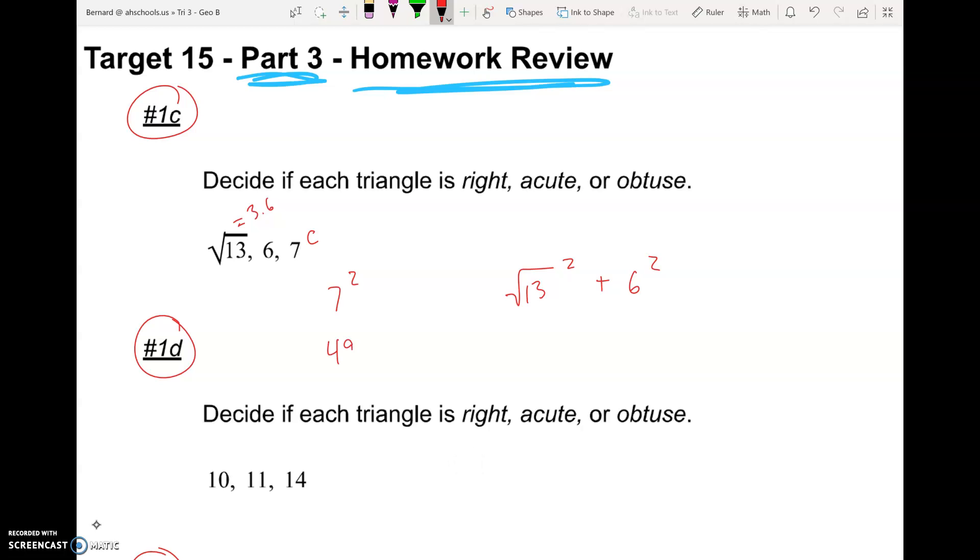7 squared is 49. Square root of 13 squared is just 13, and 6 squared is 36. We still have 49 on the left. 13 plus 36 is also 49. So in this particular problem, 49 equals 49. When they equal each other, what we have is a right triangle. Perfect.